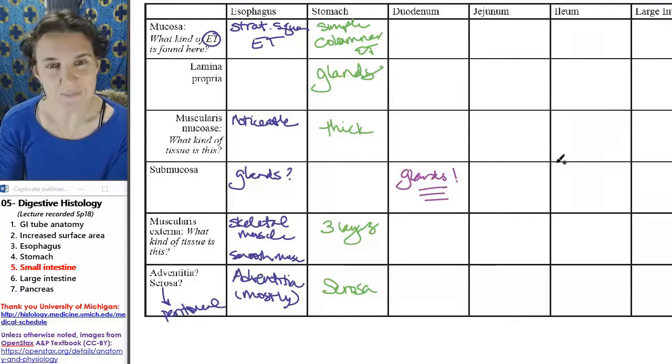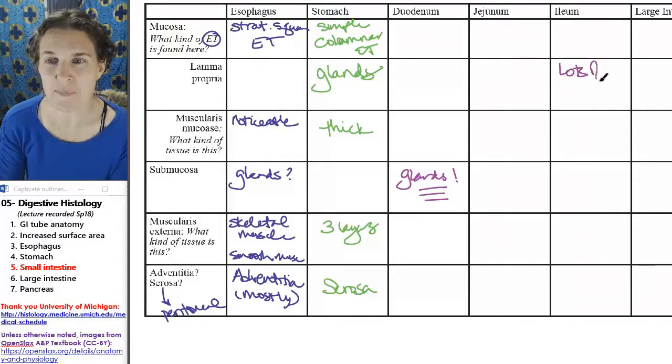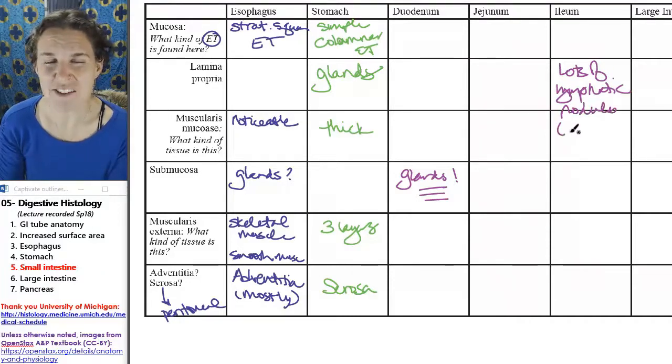The ileum, in submucosa or lamina propria, the ileum has lots of lymphatic nodules, and they have a special name in the ileum. They're called Peyer's patches.